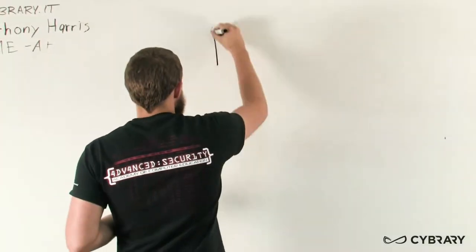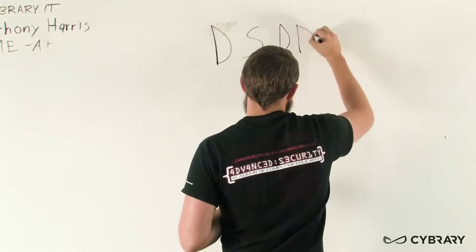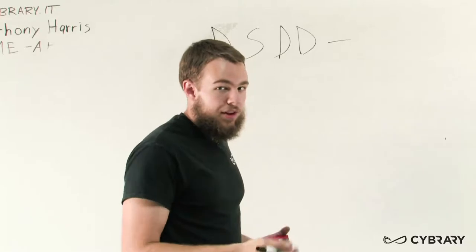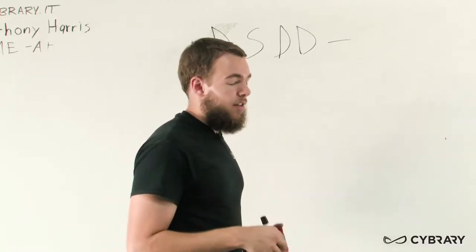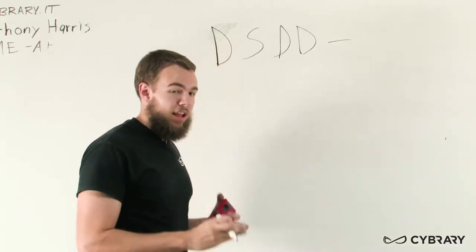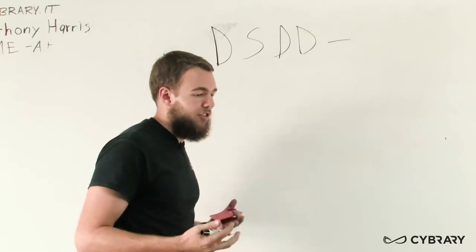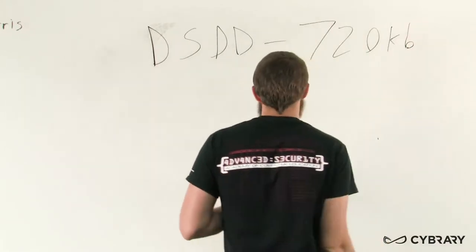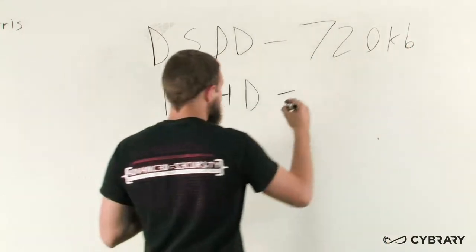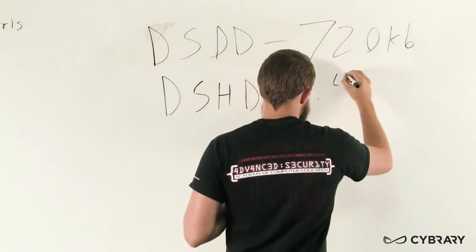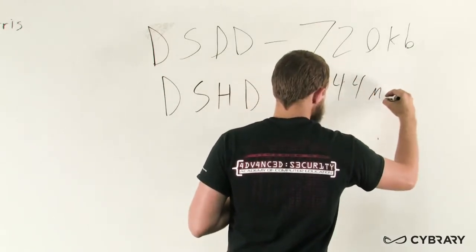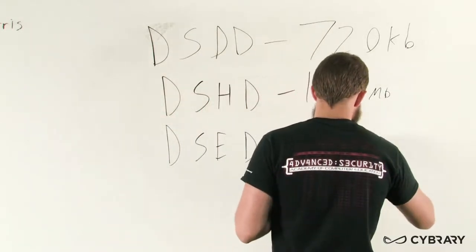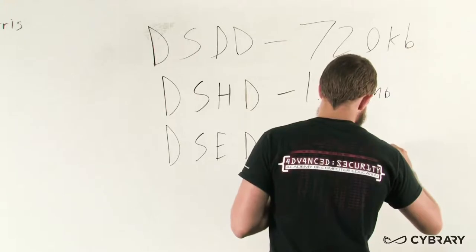Our first standard floppy disk drive is known as our DSDD. Similar to how we have dual layer DVDs versus single layer DVDs, this is also the way they create the disks in floppy drives to store information. Our DSDD will store up to 720 kilobytes of data, not very much at all by today's standards. The next step up would be our DSHD, which allows us to store up to 1.44 megabytes of data. And then lastly, we have our DSED, which lets us store up to 2.88 megabytes of data.